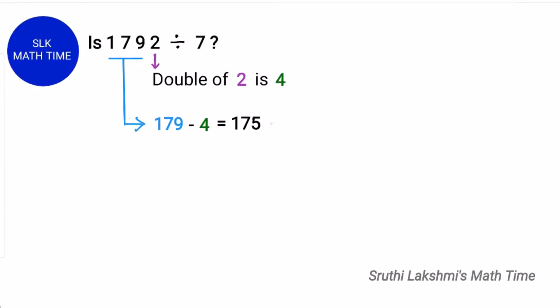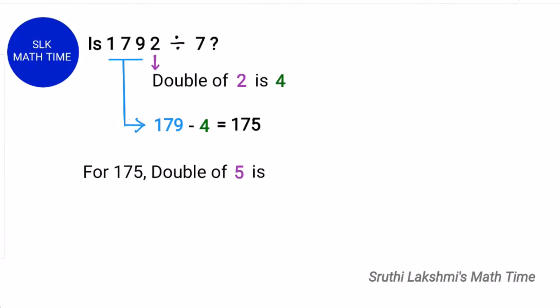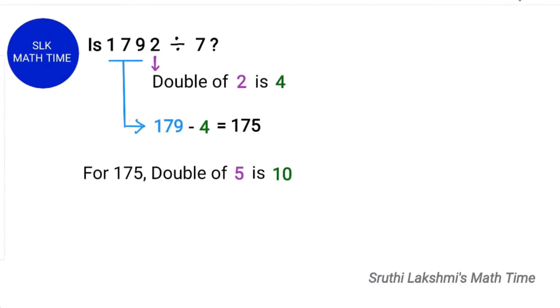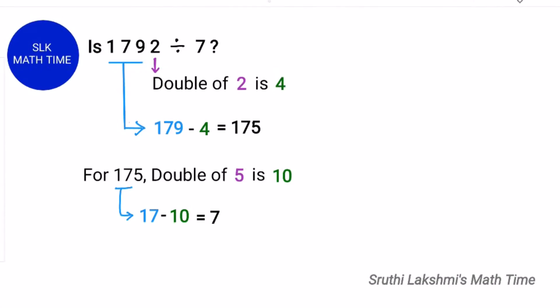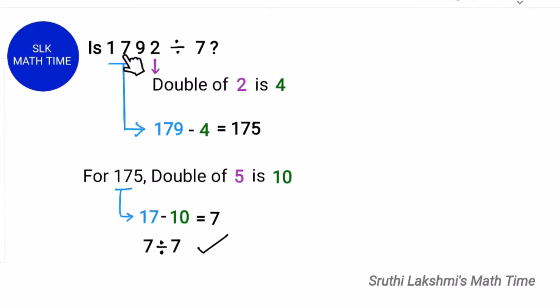So here the last digit is 5. And the double of 5 is 10. We subtract 10 from the rest of the digits. So 17. So 17 minus 10 is 7. And 7 is divisible by 7. So 1792 is also divisible by 7.